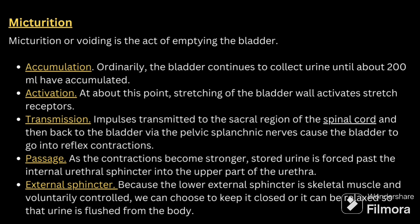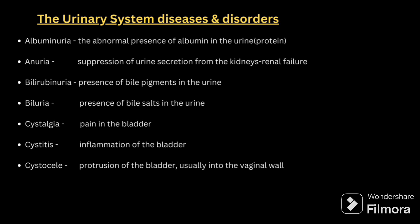Micturition, or voiding, is the act of emptying the bladder. Normally, the bladder continues to collect urine until about 200 ml has accumulated. At this point, stretching of the bladder activates stretch receptors, and an impulse is transmitted to the sacral region of the spinal cord and back to the bladder via the pelvic splanchnic nerves, causing the bladder to go into reflex contraction. As the contraction becomes stronger, stored urine is forced out. The external sphincter, being skeletal muscle under voluntary control, can be kept closed or relaxed, after which urine is flushed out.